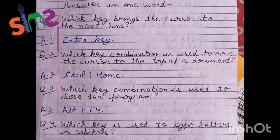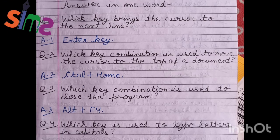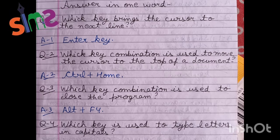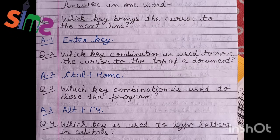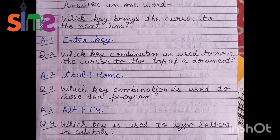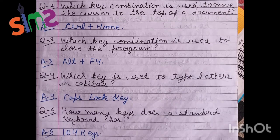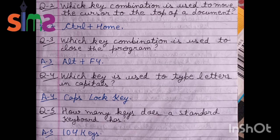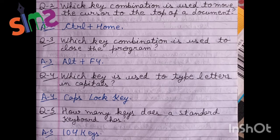Our first question is: which key brings the cursor to the next line? We use enter key. Answer is enter key. Second is: which key combination is used to move the cursor to the top of the document? We will use Control plus Home. Answer is Control plus Home. Third is: which key combination is used to close the program? For any program, we use a combination of keys — we use Alt plus F4.